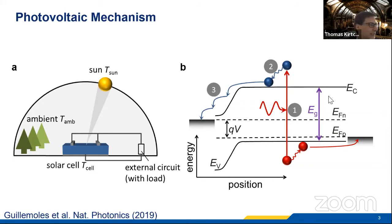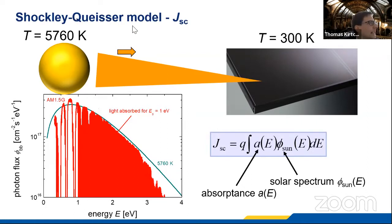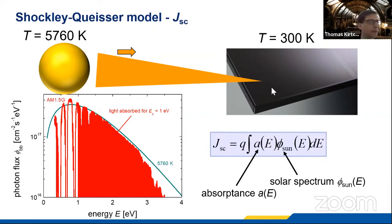So how can we calculate the efficiency of an ideal solar cell? There is a model often called the Shockley-Queisser model, after the people who came up with it. You can also call it the detailed balance model or thermodynamic efficiency limit of a solar cell. It essentially consists of two parts: first, looking at what the sun does; and second, looking at what the solar cell emits. It is always based on looking at an exchange of radiation.